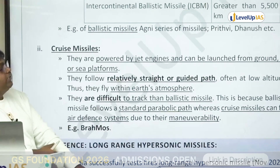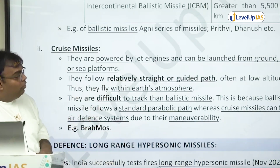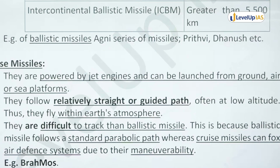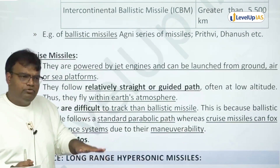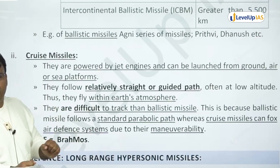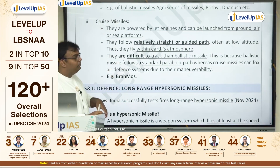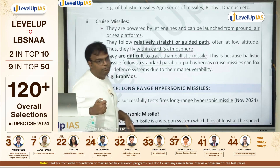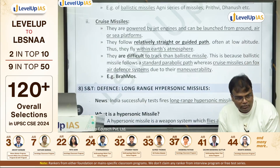Cruise missiles are powered by jet engines and can be launched from ground, air, and sea platforms. They follow a relatively straight or guided path, often at low altitude, and thus fly within Earth's atmosphere. They try to remain at lower altitudes so that detection is difficult. They are harder to track than ballistic missiles because while ballistic missiles follow a standard parabolic path, cruise missiles can evade air defense systems due to their maneuverability. India's famous cruise missile is the BrahMos — that is our cruise missile.